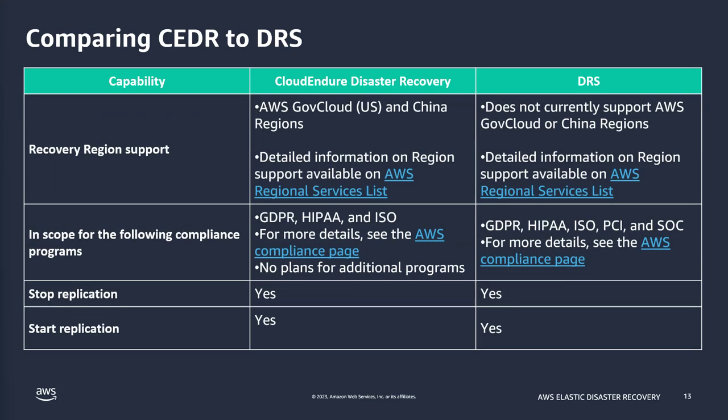For recovery region support, CloudEndure DR does support GovCloud and China regions. Currently Elastic Disaster Recovery does not, however it is on the roadmap. If you need assistance with GovCloud workloads and doing the upgrade to Elastic Disaster Recovery, please reach out to your account manager. Compliance programs: Elastic Disaster Recovery has all the compliance certifications that CloudEndure did before, and more. Stop and start replication are still available.